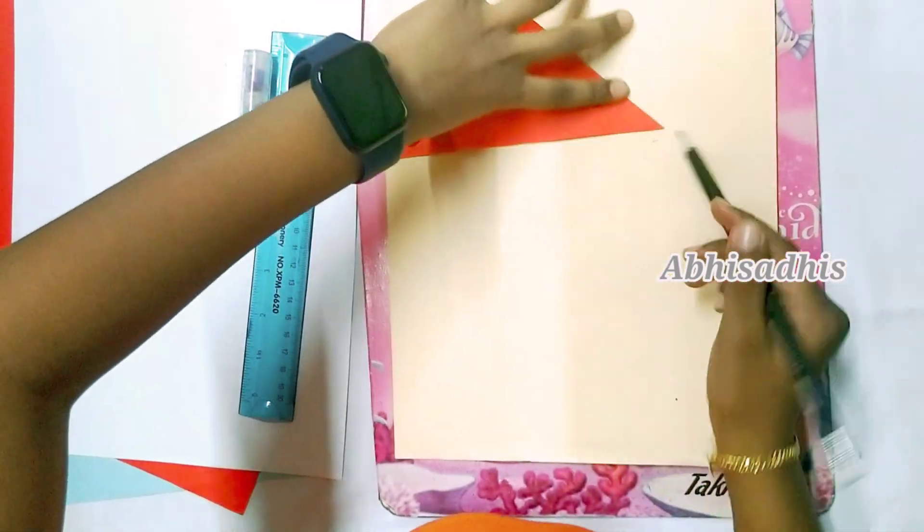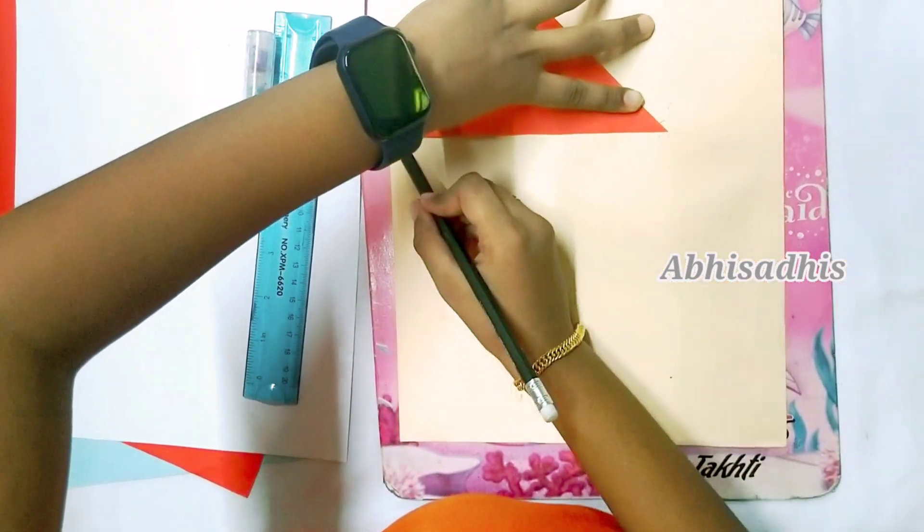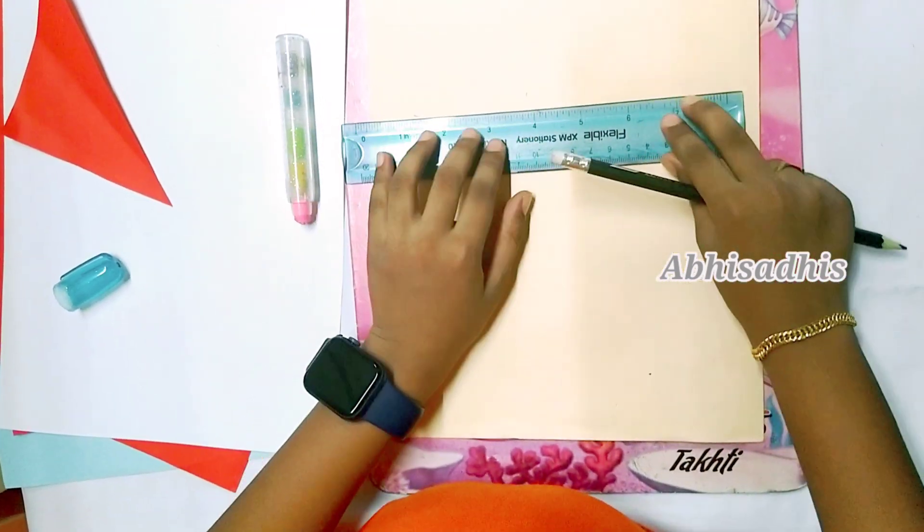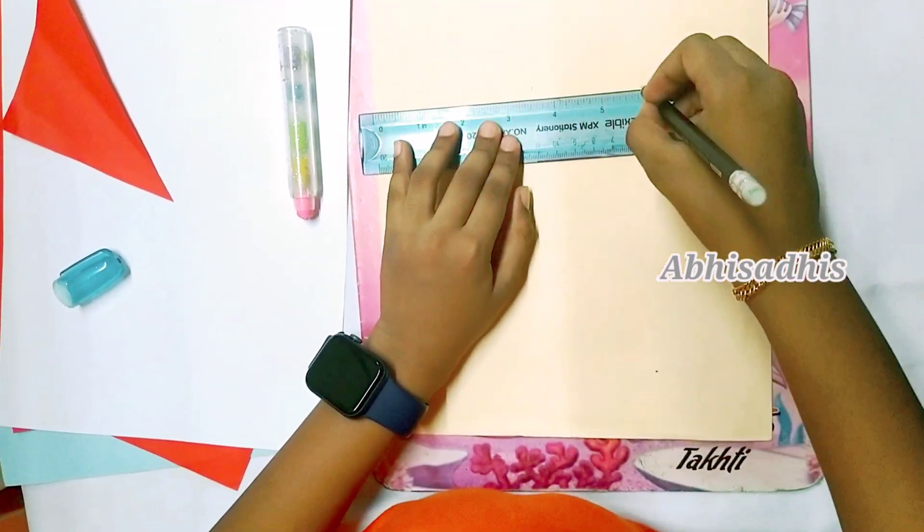First of all cut out a triangle from a red colored paper. Then cut out a rectangle from a yellow colored paper that will match the size of the triangle.